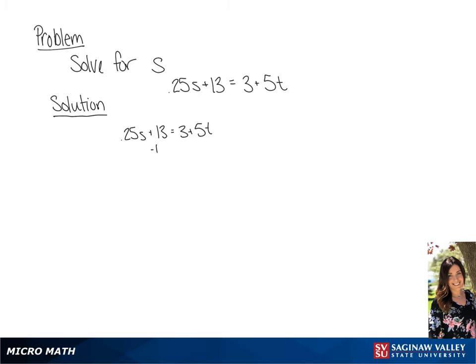So the first thing we're going to do is subtract 13 from each side, giving us 0.25s = -10 + 5t.